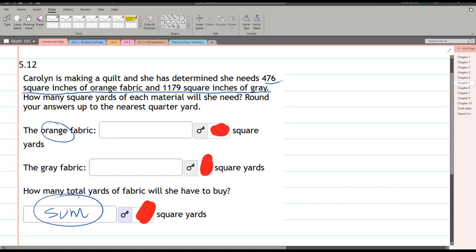So we have 476. These are square inches so you could write it as inches squared or you could write as inches times inches. We have to turn inches into yards and you probably know that 36 inches equals one yard which is three feet. 12 inches in a foot so three times 12 gets you that 36 inches in one yard.